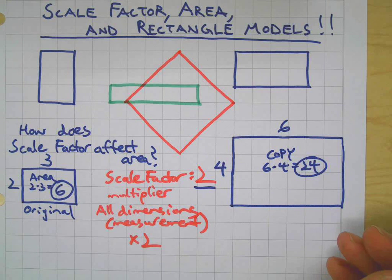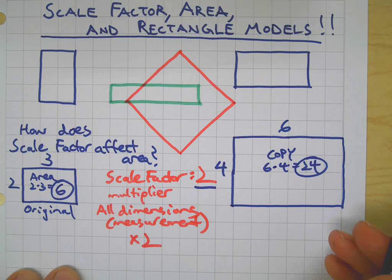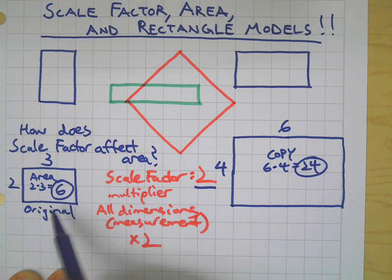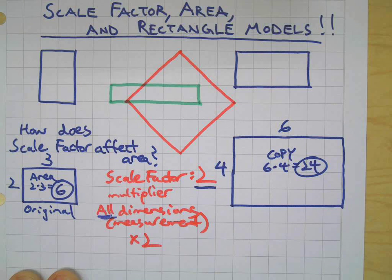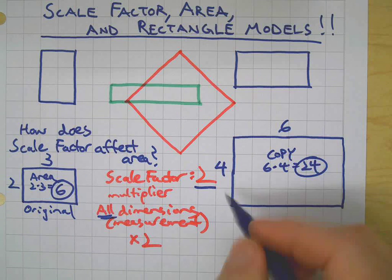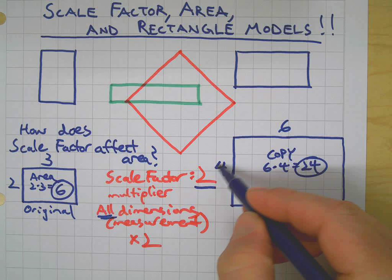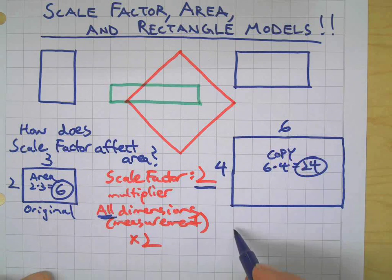Now let's compare the area of the original to the area of the copy: 6 and 24. The scale factor was 2. A common mistake people make on scale factor and area problems is they would say: original area 6, scale factor 2, new area 12. But as you can see, that's not true when you keep in mind that scale factor is multiplying all dimensions.